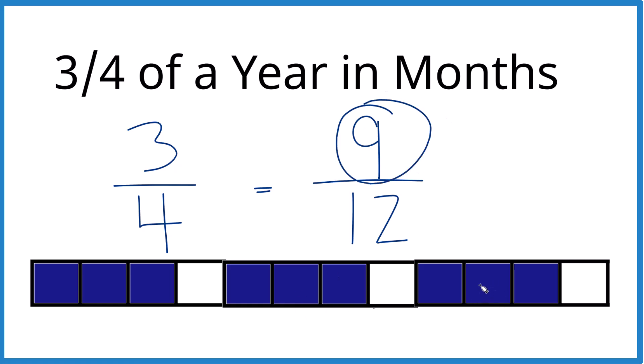One last way. This is kind of the math way. If we take three-fourths of 12 months, instead of of, we could just multiply. And essentially we multiply by 12 over one, because that's the same as 12. So it just lines things up.